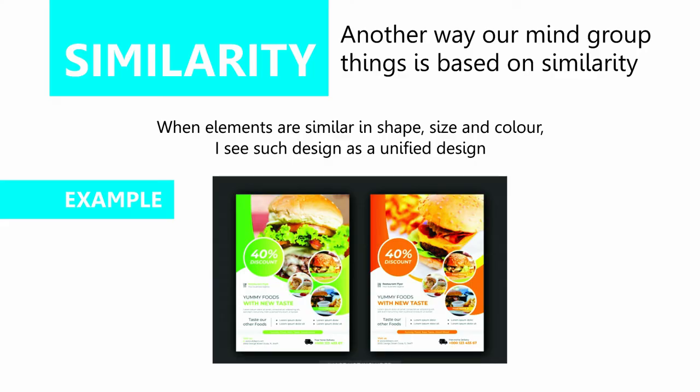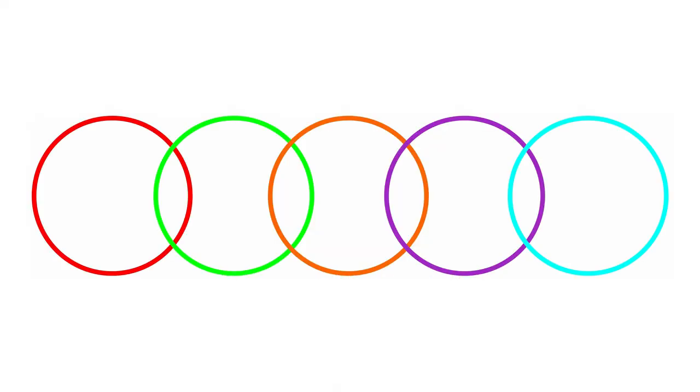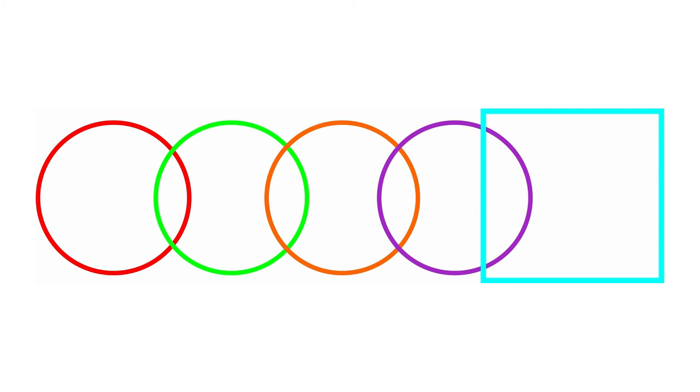Another way our mind groups things together is based on similarity. When your elements are similar in shape, size, and color, I see such design as a unified design. Due to similarity these circles look unified, but simply adding this square, it's no more unified.